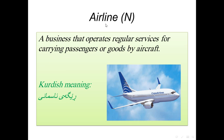Another vocabulary is 'airline'. Its word form is noun. An airline is a business that operates regular services for carrying passengers or goods by aircraft. The Kurdish meaning is 'reje'. As you see from the picture, this plane in the sky is working for an airline, used for carrying passengers and supplies from one place to another.